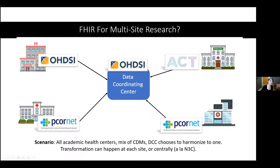In the first scenario — a pretty common one — we've got all academic health centers, all with the same data model, in this case Odyssey. The Data Coordinating Center is happy that everybody has the same data model. There is no need to use FHIR here. This is kind of your ideal scenario. The next scenario is more similar to the N3C example: everybody's in academic health centers, you have a mix of common data models, and the Data Coordinating Center chooses to harmonize to one of those. The DCC has a choice: harmonize centrally, or tell individual sites to transform their data before participating.